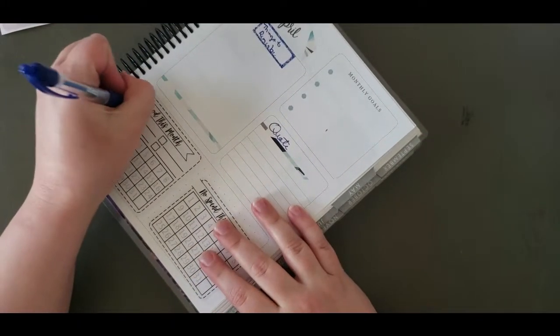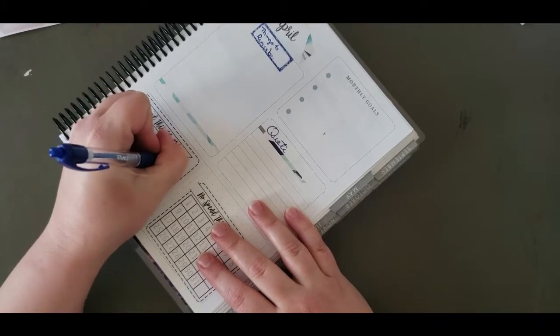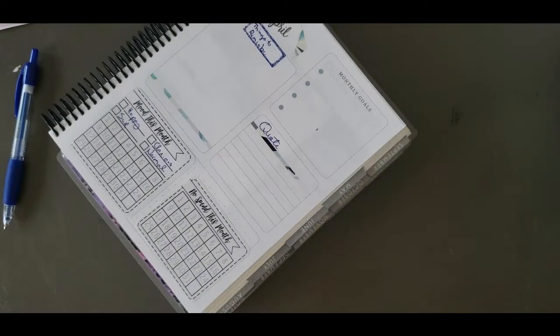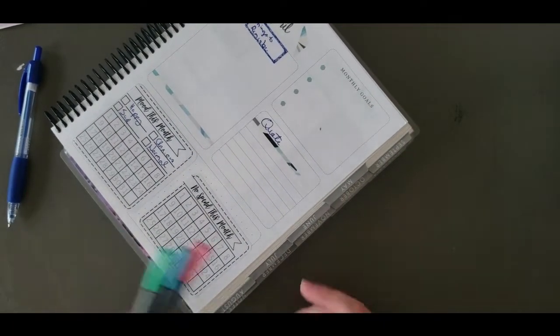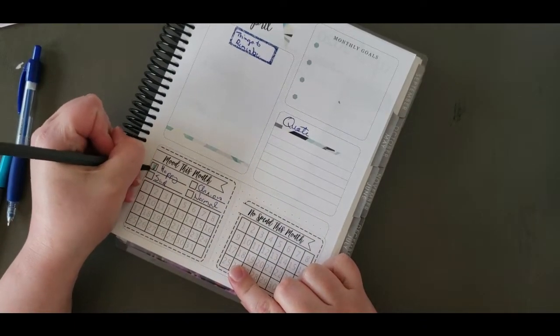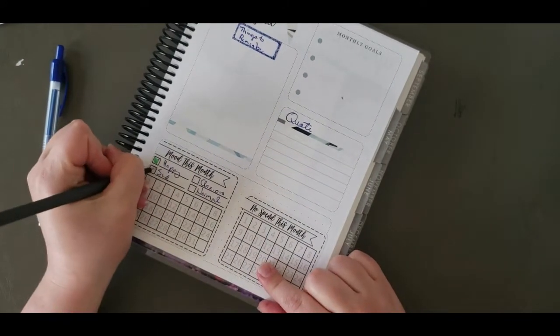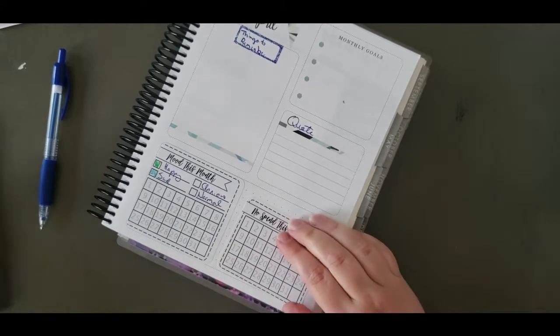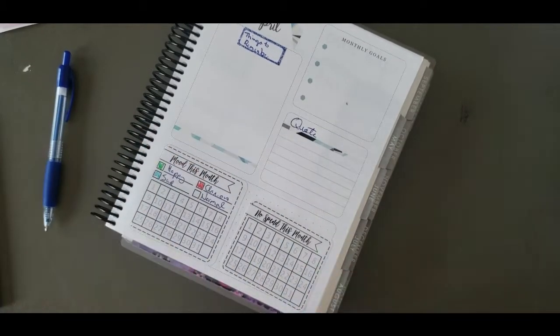All right, so we have happy. Sorry about that. I had to walk away and grab some markers. So I'm going to do green for happy, blue for sad, red for anxious, and just leave normal blank. And I will fill this in off screen.